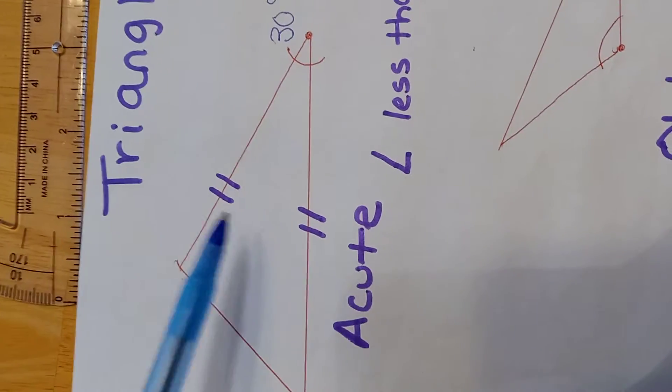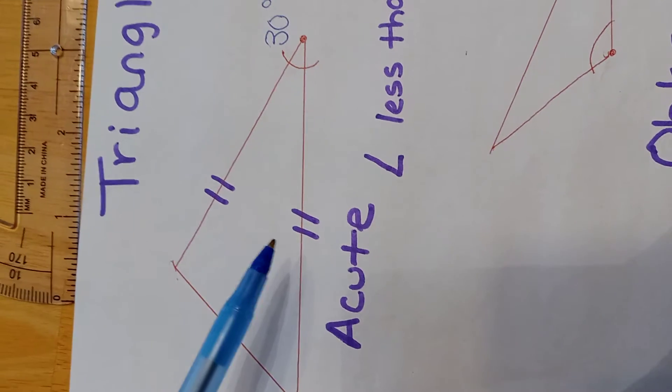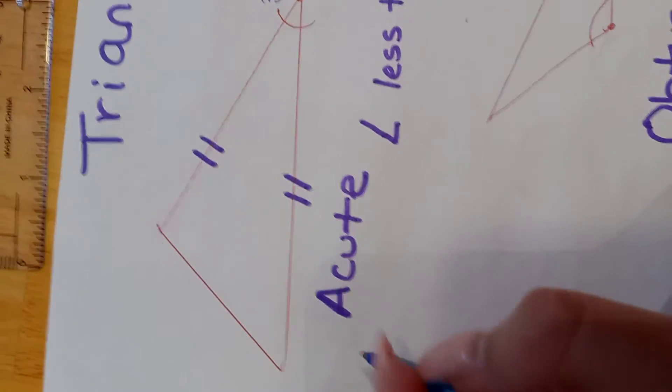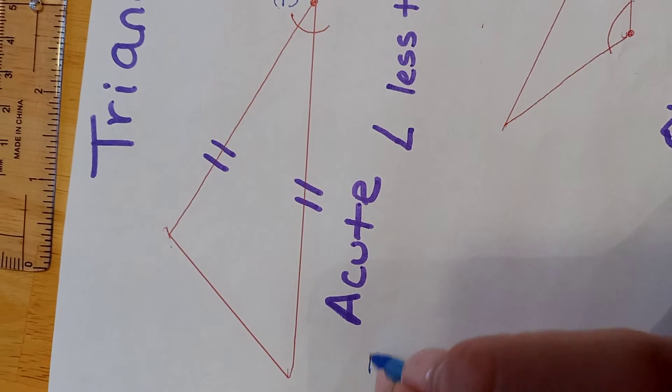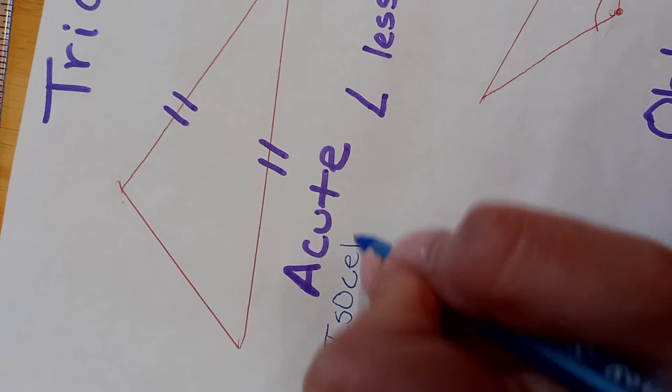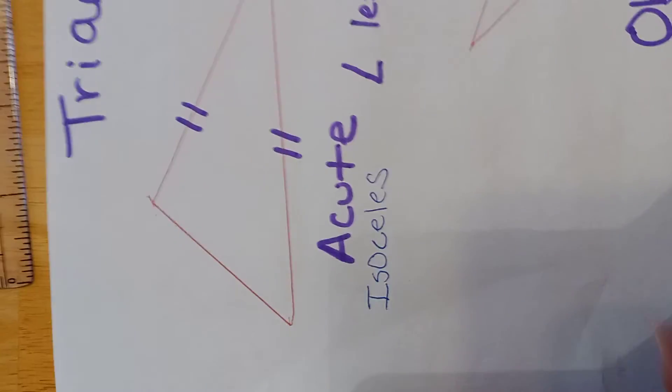And also, an acute triangle has two equal sides, which makes it an isosceles triangle. We're going to spell it right here: I-S-O-C-E-L-E-S, isosceles triangle.